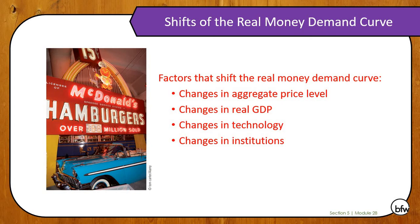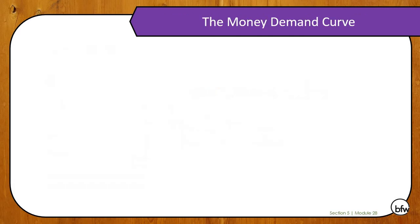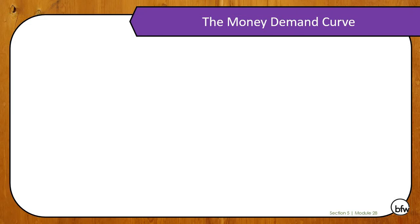If the economy is contracting, they're going to need less money to buy things. Changes in technology: today it's much easier to transfer money between savings and checking. If you've ever been in line at the grocery store and moved money over because you realized you were going to be short on what you needed to buy, that's an example of technology helping you not have to have as much cash on hand. Institutions are just different rules that banks have in terms of how they can operate.